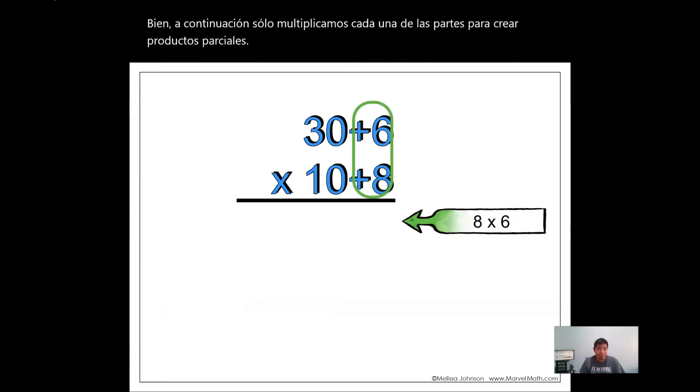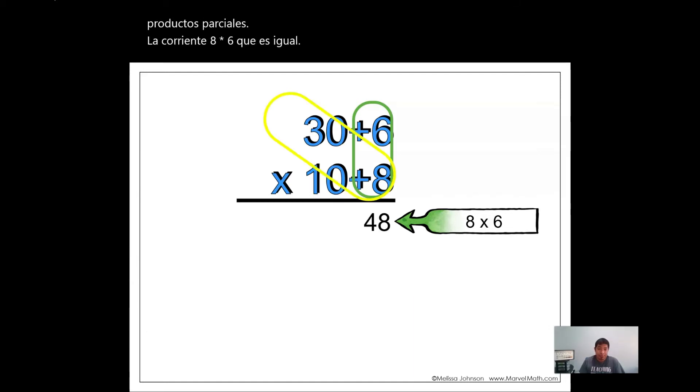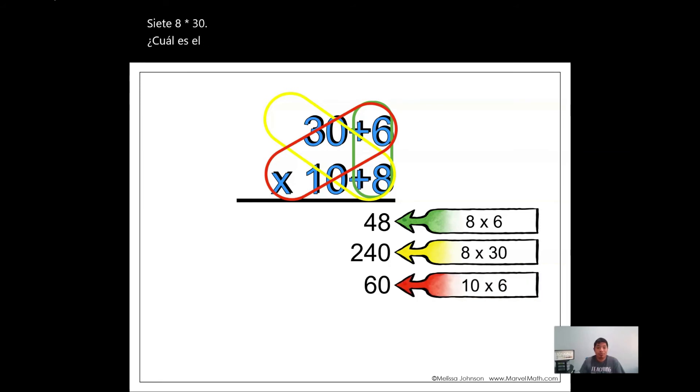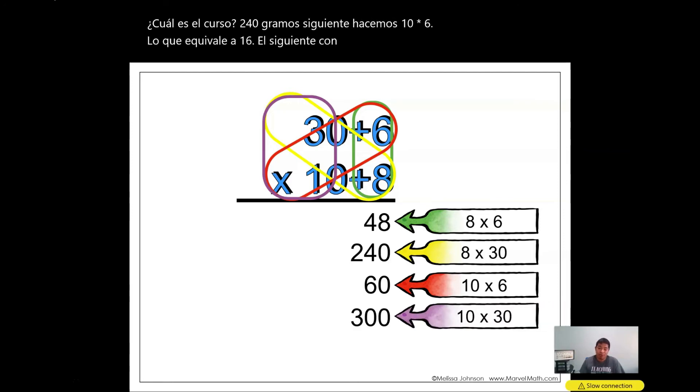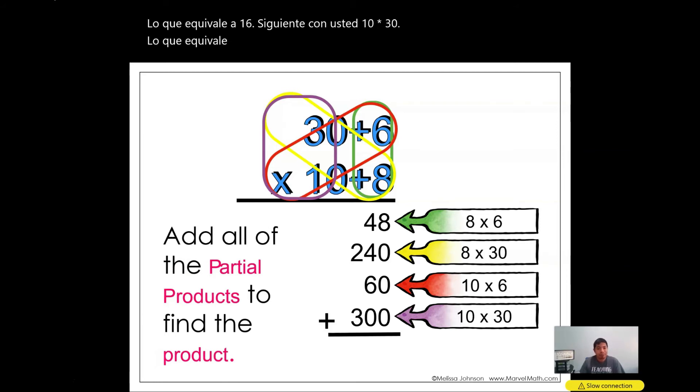Next we just multiply each of the parts to create partial products. 8 times 6, which equals 48. And then 8 times 30, which equals 240. Next we do 10 times 6, which equals 60. Next we do 10 times 30, which equals 300. Lastly, we just add up all the partial products to find the product, and it equals 648.